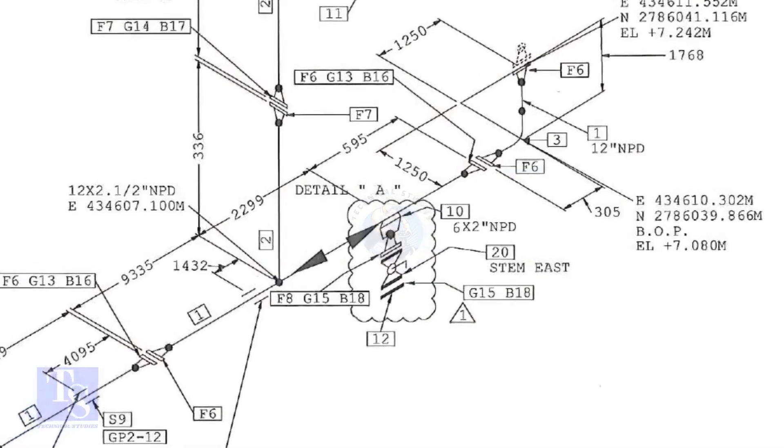Though we are going to fit up a weld-olet, the procedure is the same for thread-olet, soak-olet, etc. In this drawing, the size of the weld-olet is 6 inch into 2 inch.